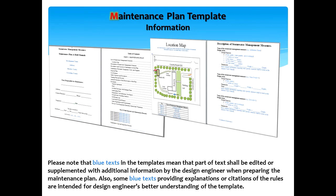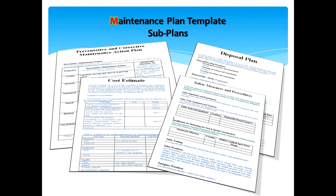The template is in Microsoft Word format so that design engineers can edit and fill in detailed information regarding maintenance. The responsible party can also edit the maintenance plan when necessary as a result of the annual evaluation. Here is a look at the preventative and corrective maintenance action plan, cost estimate, disposal plan, and safety measures and procedures sub-parts of the maintenance plan template. Please note that blue text in the templates indicates that part of the text needs to be edited or supplemented with additional information by the design engineer. In some areas, blue text provides explanations or citations of the rules and is intended to provide the design engineer with a better understanding of the template.